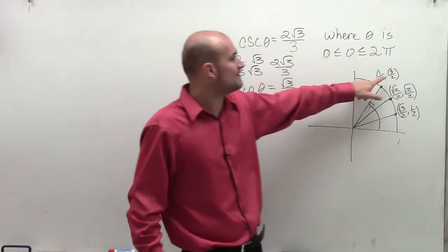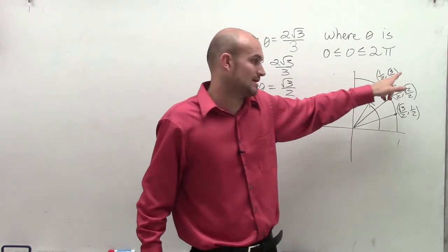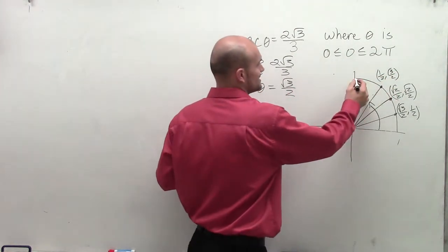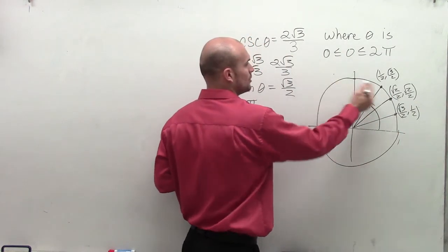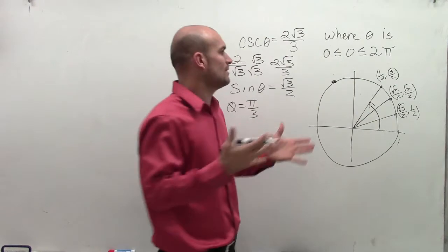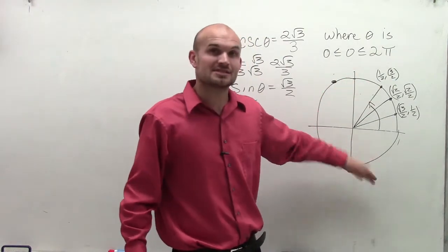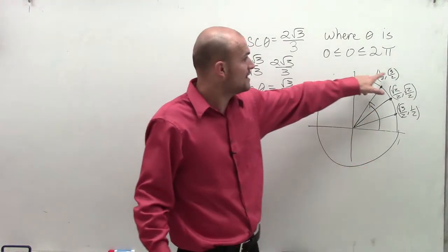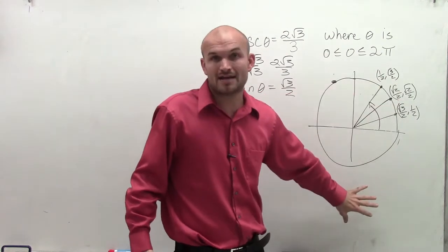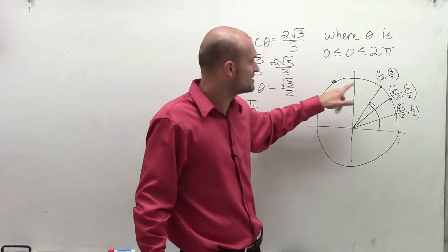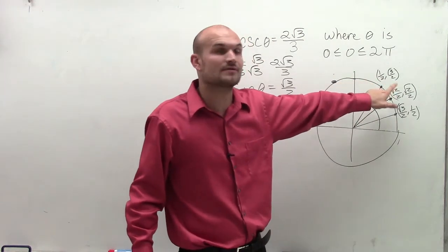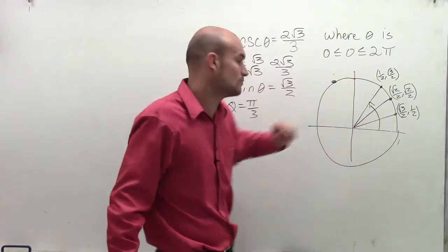Now, where else do we have a y-coordinate of square root of 3 divided by 2? Well, the next point, if I was going to continue my unit circle here, is going to be reflected over the y-axis. Now, why would I not want to reflect over the x-axis? Because if I reflect over the x-axis, my y-coordinates will now be negative. But if I reflect it over the y-axis, I'm now going to still have a positive y-coordinate.